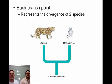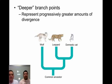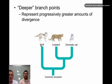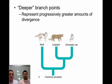Each branch represents the divergence of two species — so a leopard and a domestic cat somewhere down the line shared a common ancestor. Deeper branches represent progressively greater amounts of divergence. There was a common ancestor between wolves and cats all the way further back, but because it's further down on the phylogenetic tree, they're less closely related than others. If two organisms are on the same branch, that means they are more closely related.